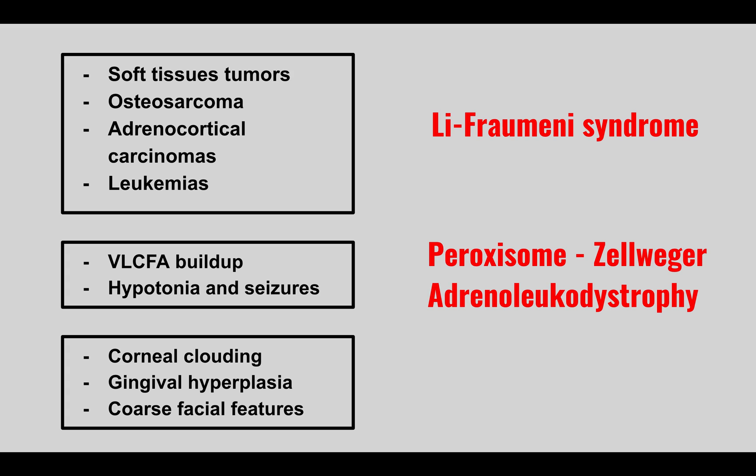The next condition: a patient will have corneal clouding, gingival hyperplasia, and coarse facial features. This is I-cell disease. In this condition, patients lack mannose binding, and when it's absent, the buildup occurs in the cells because it can't be transported out to the lysosomes where it's normally supposed to go.